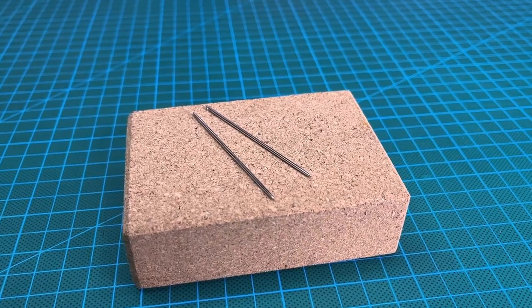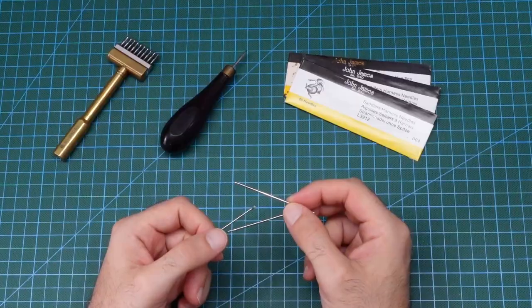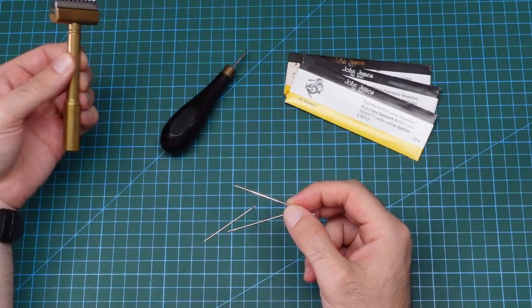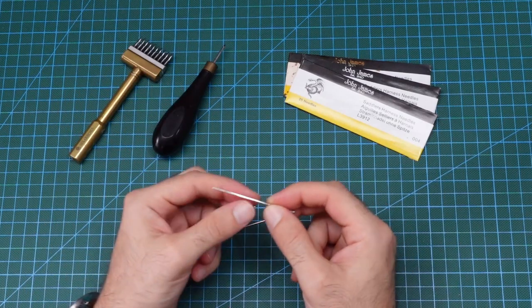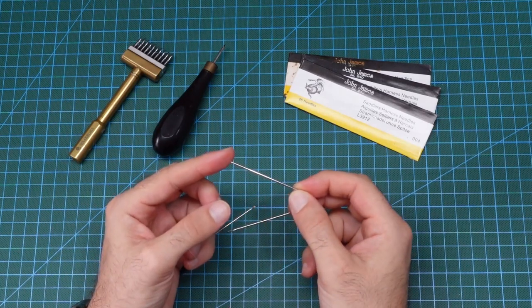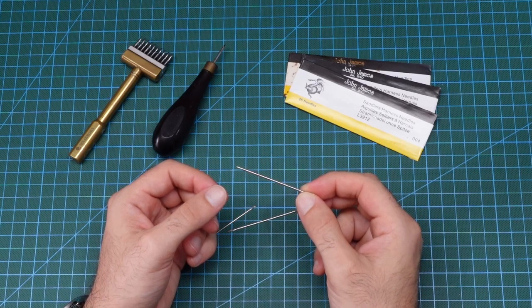Instead they are rounded off at the end, which means that they are unable to directly pierce leather and will need either pricking irons or an awl to first create an opening in the leather. The rounded needle tip can then slip through this opening without getting stuck in the hole while you are hand stitching.